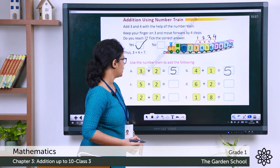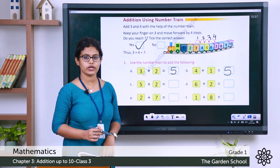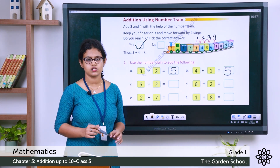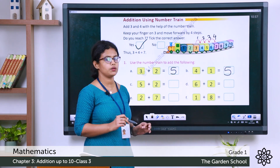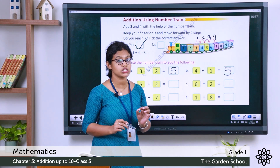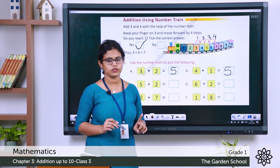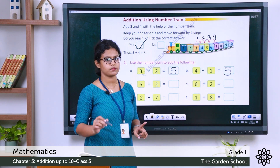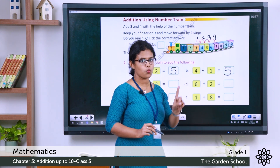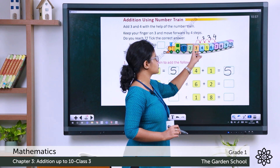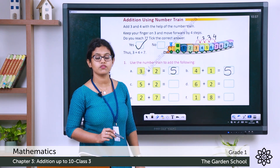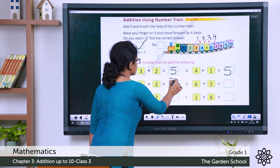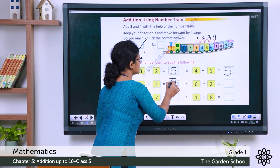Next: 5 plus 2. Keep your finger on number 5, then move 2 times — 5 to 6 (1), 6 to 7 (2). We reached number 7. So the answer is 7.